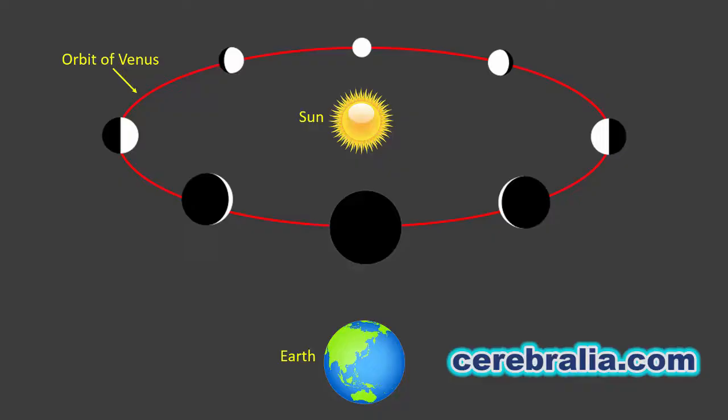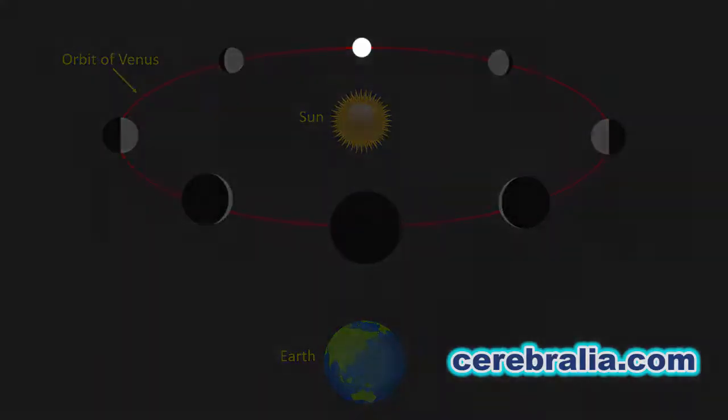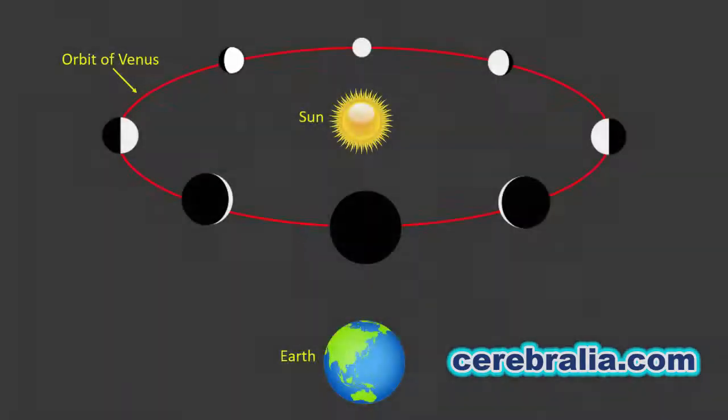Galileo found that Venus went through phases, just like our moon. When Venus is full, it appears smaller, and when Venus is crescent, it appears big. The change in size implies that the distance between Earth and Venus is changing. This fact led to the conclusion that Venus revolves around the sun, rather than Earth.